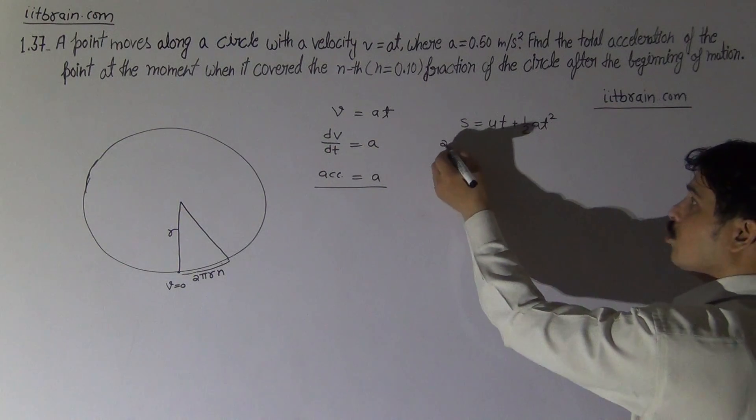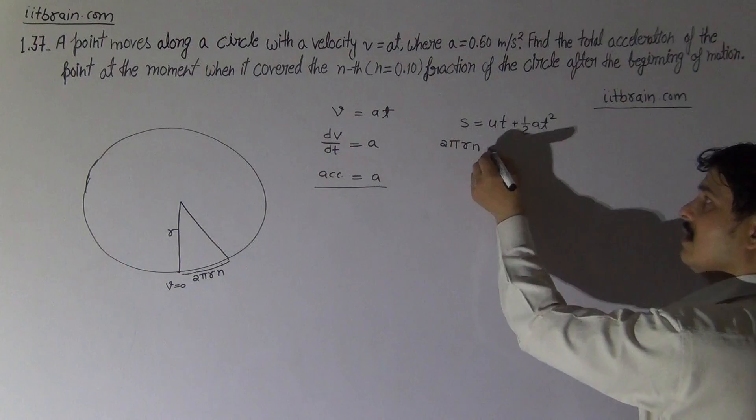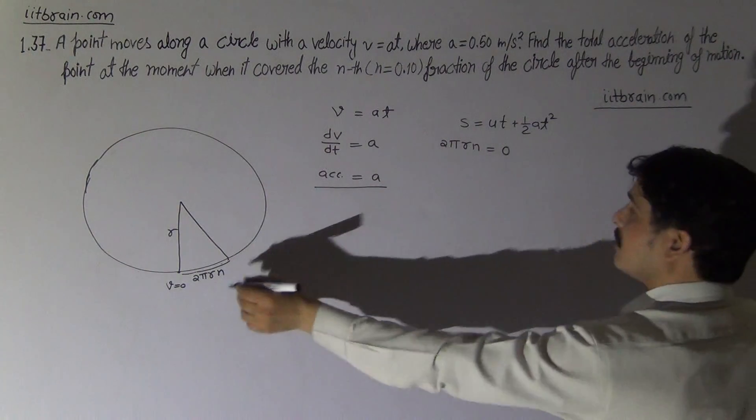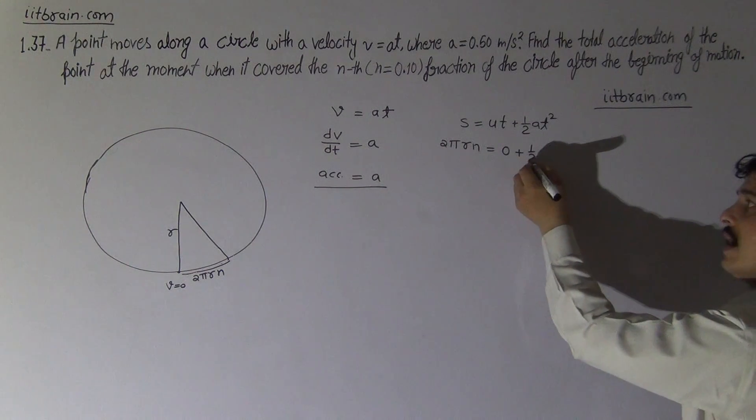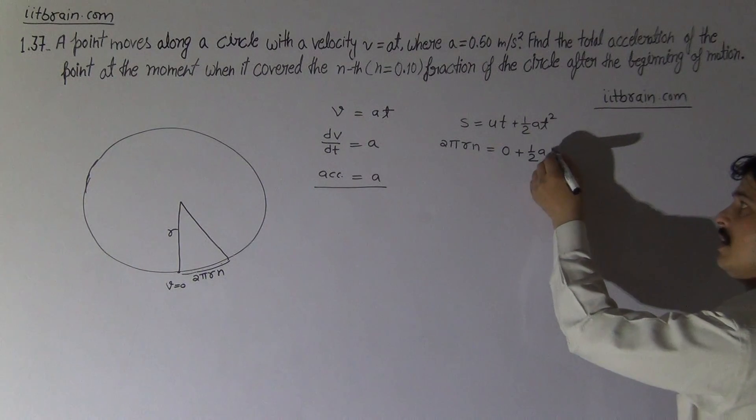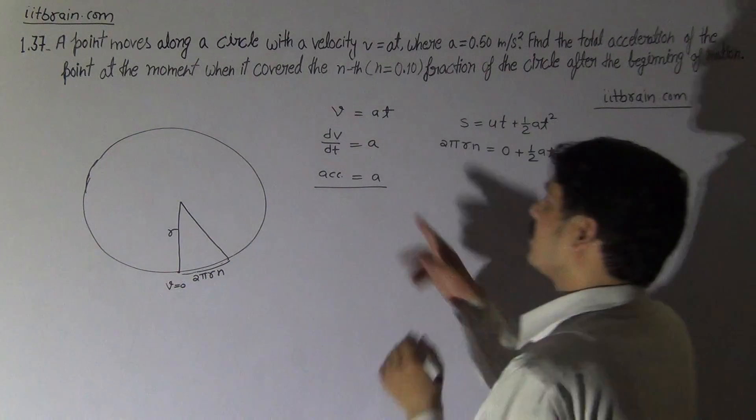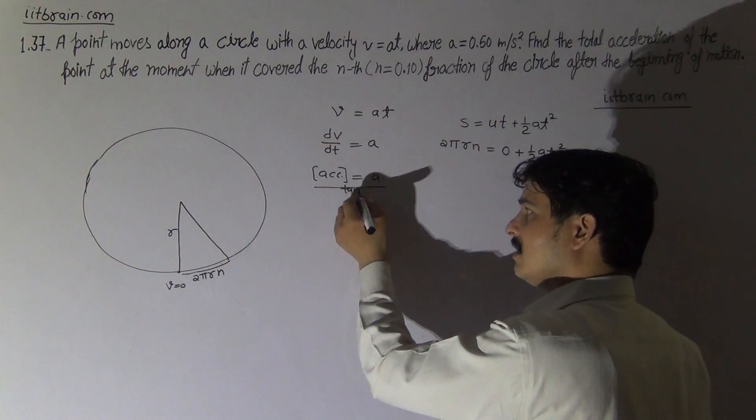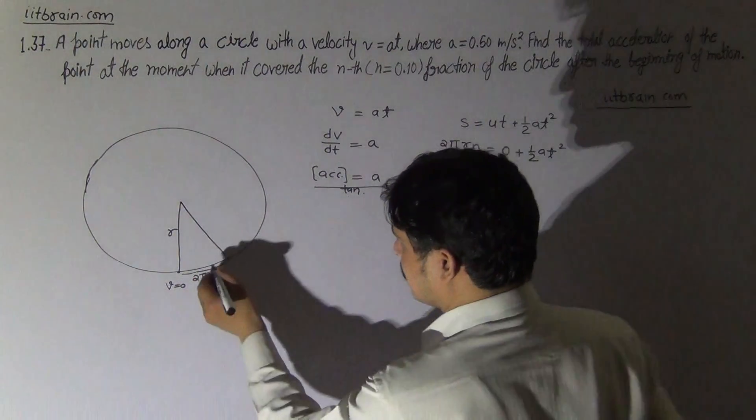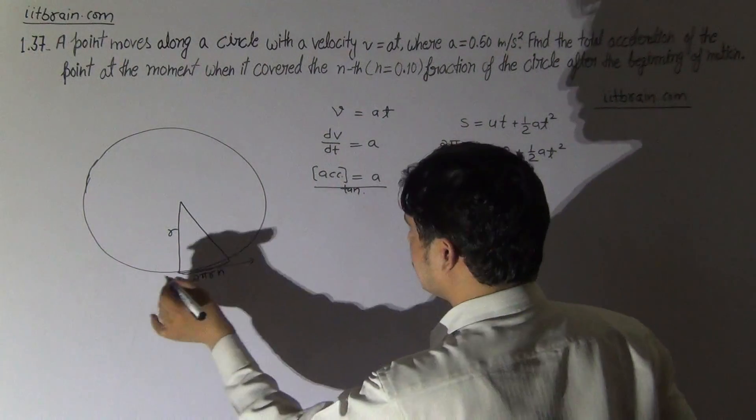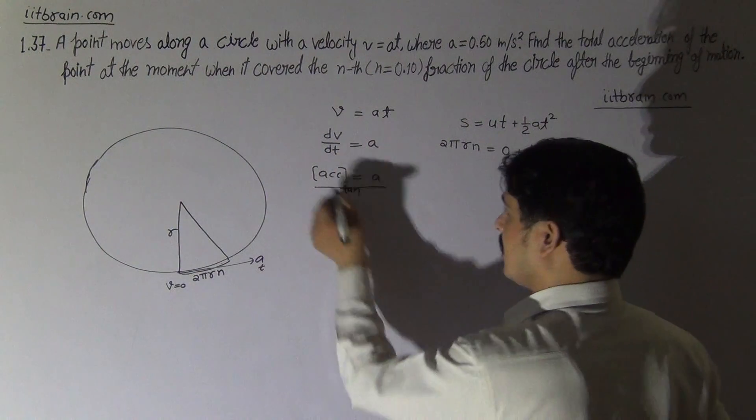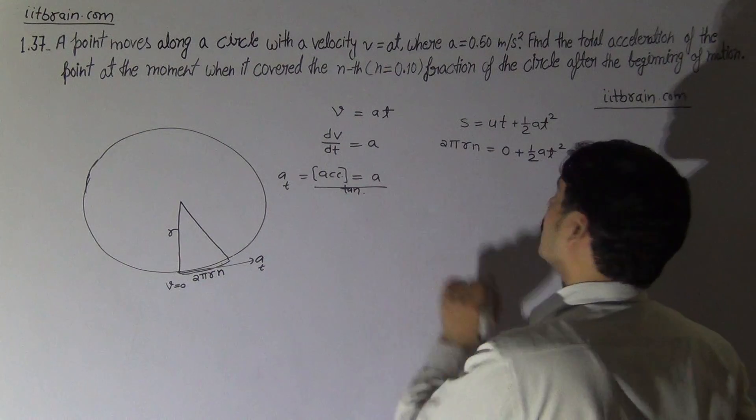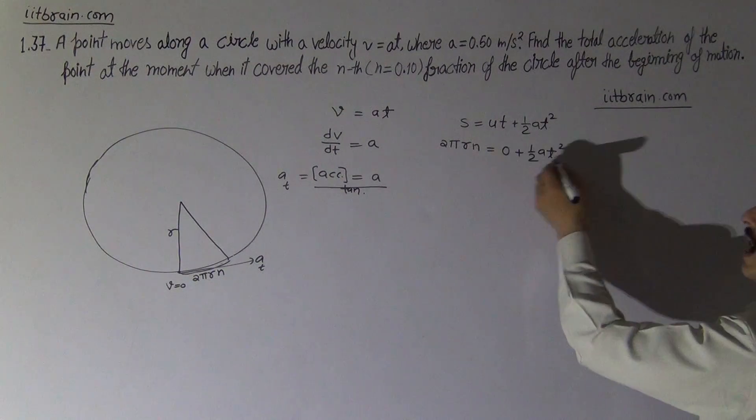Now s is 2πrn, u is 0 as given in the figure, plus half acceleration a into t². This a obtained by differentiating this equation is tangential. So this is tangential acceleration, it means acceleration along tangent. At, this is at, acceleration along tangent. So 2πrn = ½at².